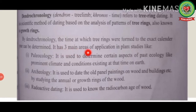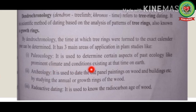Dendrochronology has three main areas of application. In paleoecology, it is used to determine aspects of past ecology like prominent climatic conditions existing on the earth at that time. Since secondary xylem and secondary phloem show different rates of growth at different climatic conditions, the pattern of annual rings can be used to identify the prevailing climatic conditions.